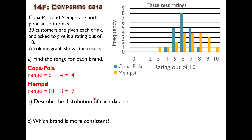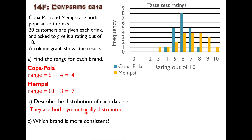We can also describe the distribution of each data set. If we look at Copapola, it appears to be fairly symmetric. Mempsi is fairly symmetric too — there is an extra little bit that's not quite symmetric — but they're both quite close. Drawing a curve on top, you can see a nice symmetric curve for Copapola, and roughly the same for Mempsi as well.